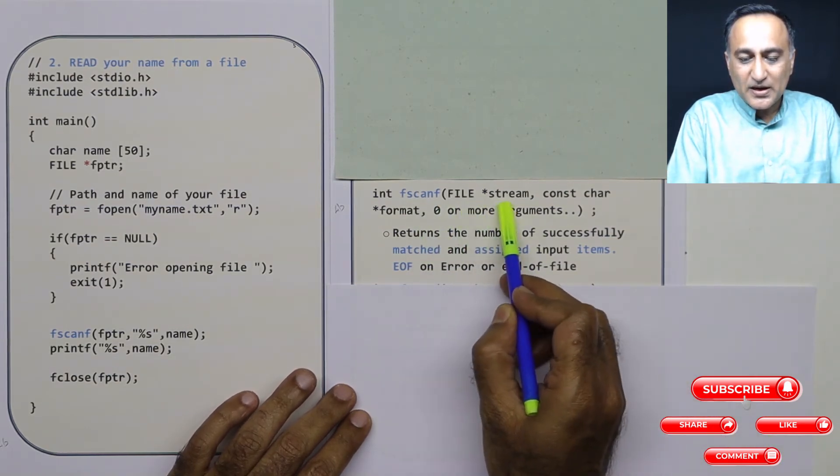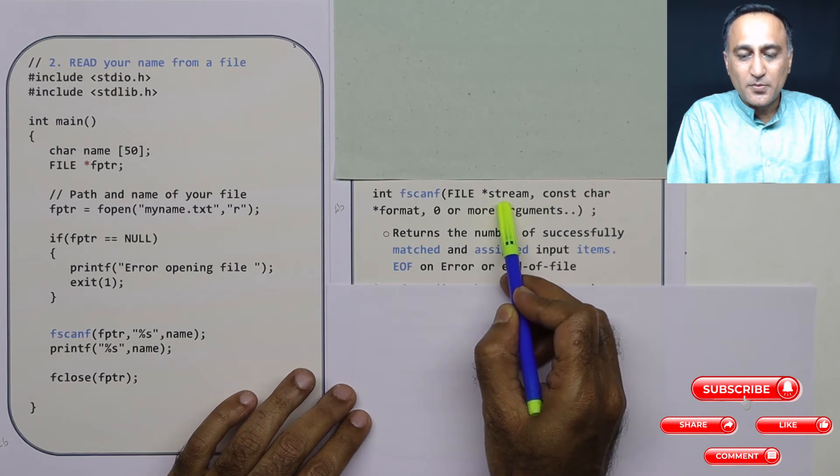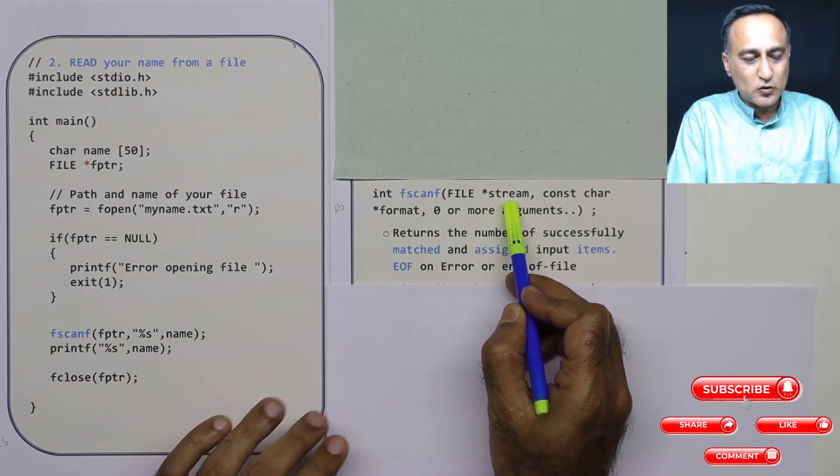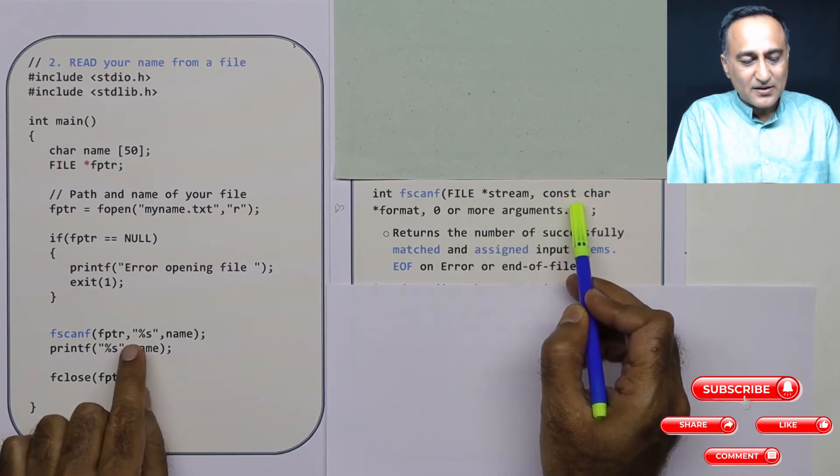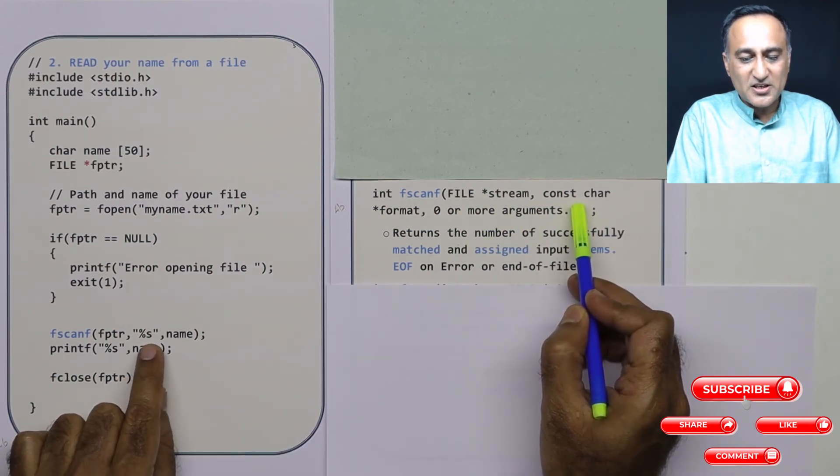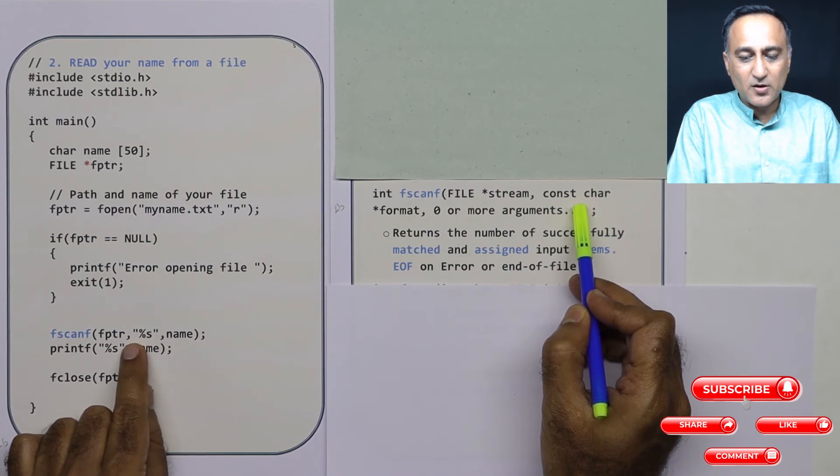So fscanf, the first parameter happens to be the source of input or the stream. The source of input in this case happens to be a file. Next, this conversion specifier %s, that's a constant string because it's in double quotes.